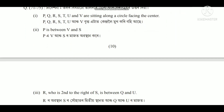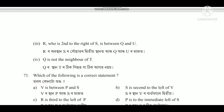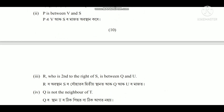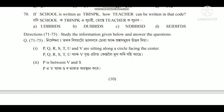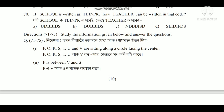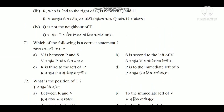P is between V and S. Q is not the neighbor of T. P, Q, A, S, T, U, and V are sitting along a circle facing the center.